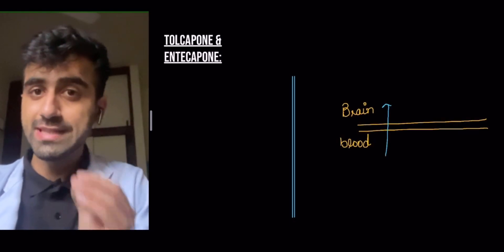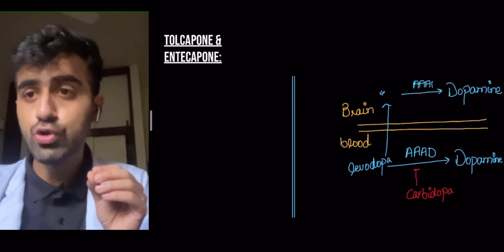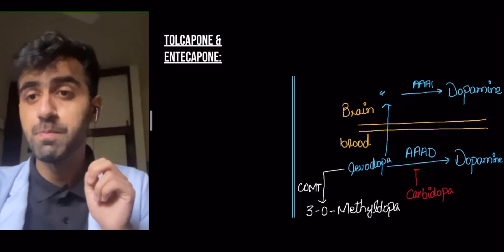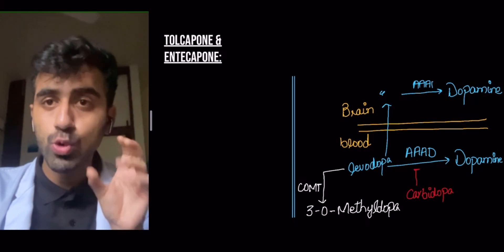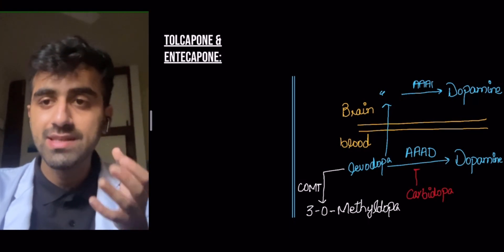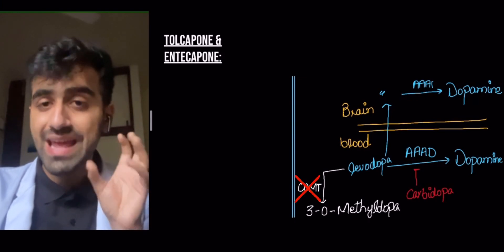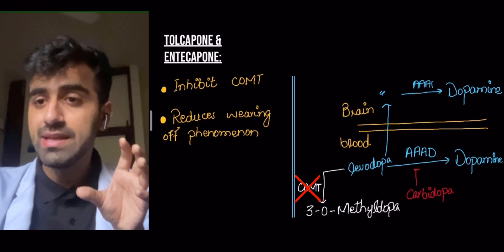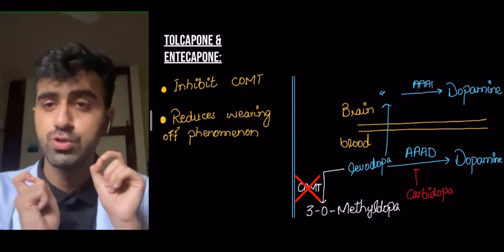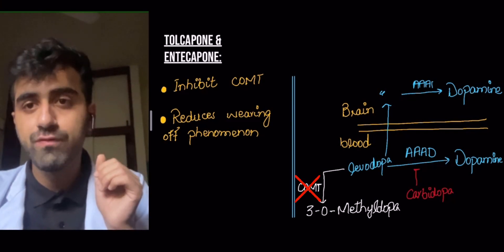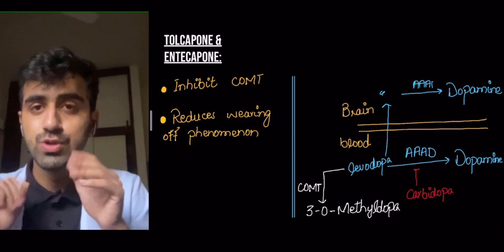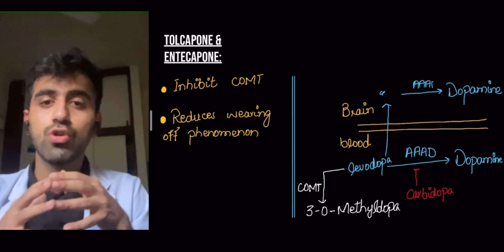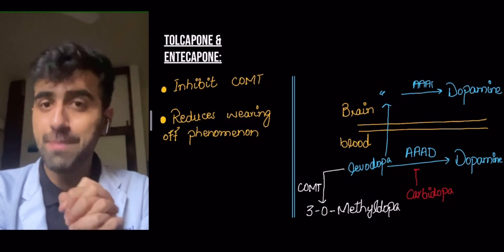Now let's look at tolcapone and entacapone. You need to understand this illustration of the blood-brain barrier. Levodopa crosses the blood-brain barrier and is converted into dopamine, but it is also converted by an enzyme known as COMT — you can remember this because tolcapone has an 'O' in its name, and so does COMT. COMT converts levodopa into 3-O-methyldopa, a less active form. Tolcapone inhibits COMT, which reduces the wearing-off phenomenon so levodopa stays active longer — its half-life is essentially increased by decreasing metabolism of the drug.